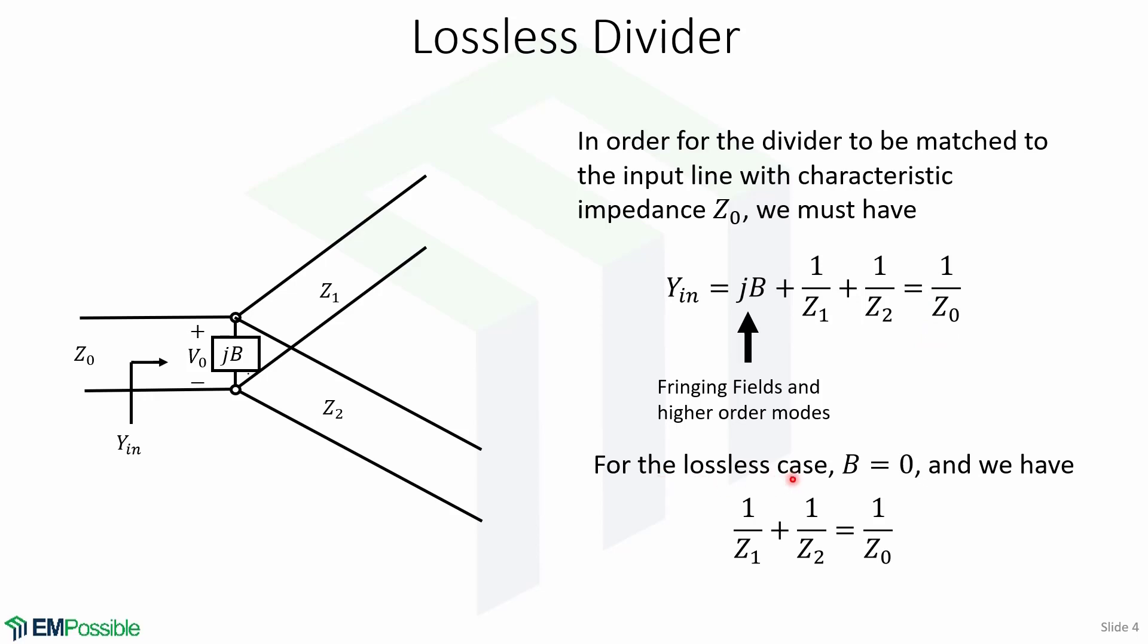If the transmission lines are lossless, then the characteristic impedances are real. Therefore, B equals 0, and we have that 1 over Z1 plus 1 over Z2 equals 1 over Z0.